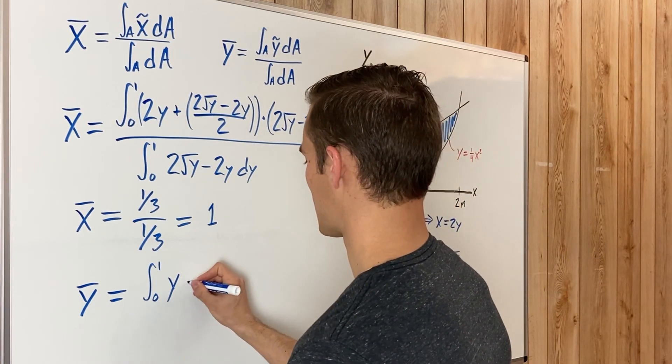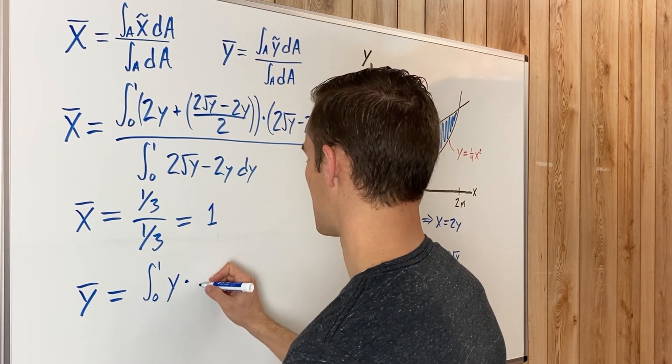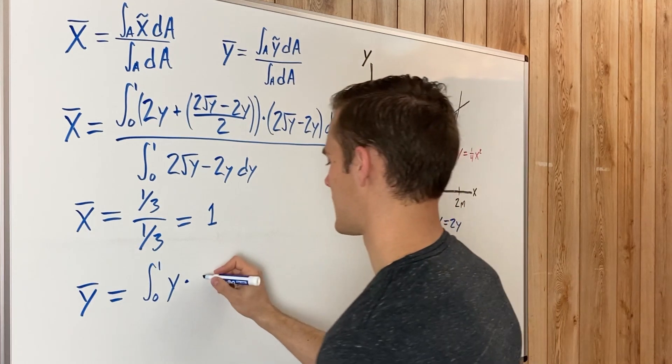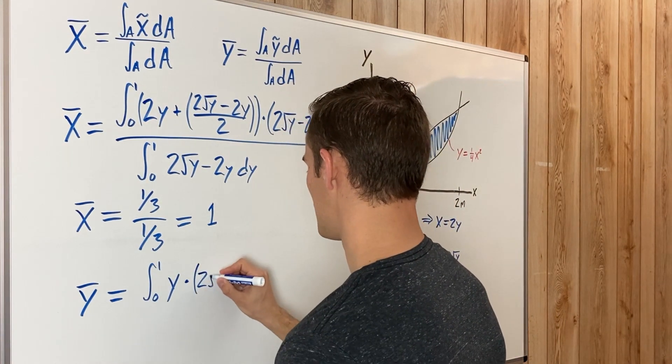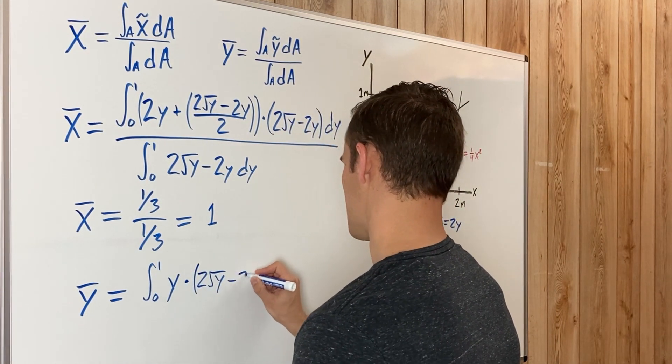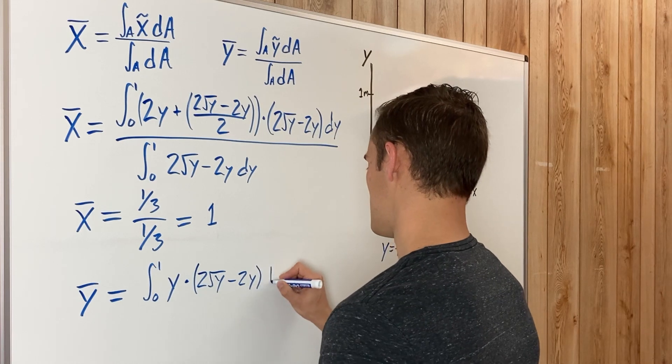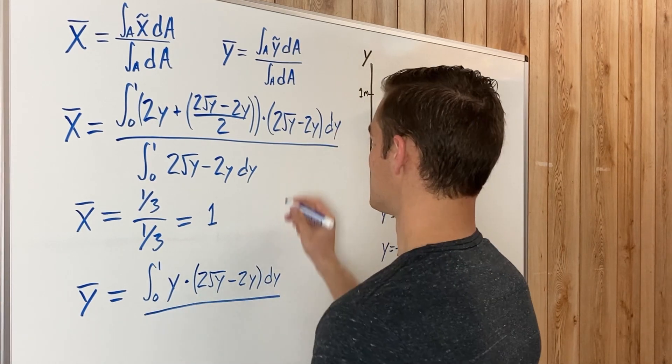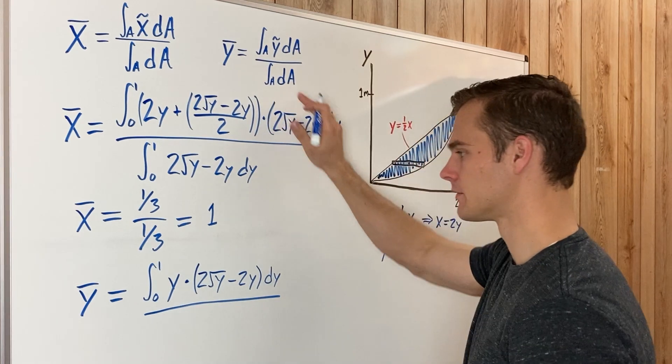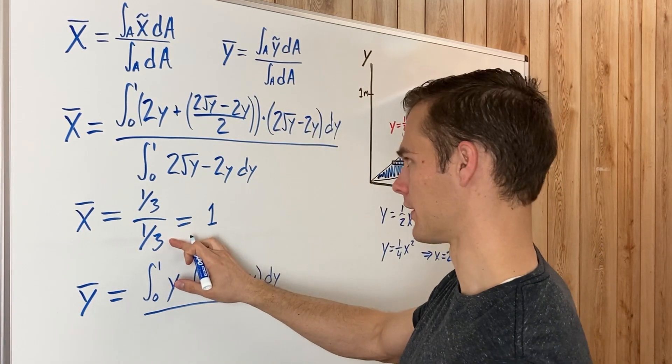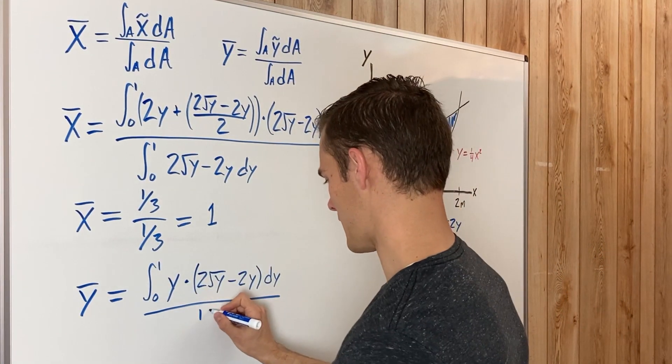So we find Y tilde multiplied by DA. I already found what that is: two square root of Y minus two Y, DY. And the integral of DA, we already found that it was one third, so there's no need to calculate it again. Just write it down there.